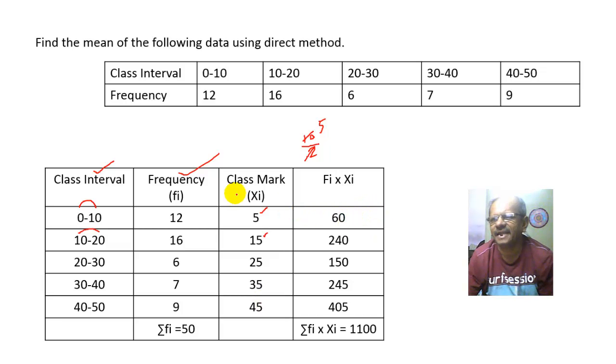Now we will find Fi Xi that is the product of Fi and Xi. So it will be 12 times 5 is 60. 16 multiplied by 15 will be 240. 6 multiplied by 25 will be 150. 7 multiplied by 35 is 245. 9 multiplied by 45 is 405. Now we take the sum of the frequency, denoted by summation of Fi. So summation of Fi equals 50. Similarly, summation of Fi Xi equals 1100.